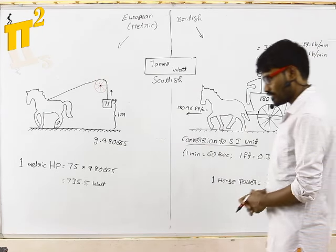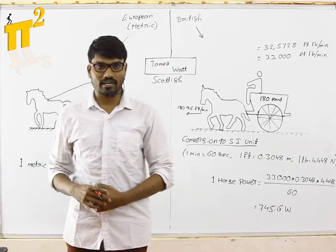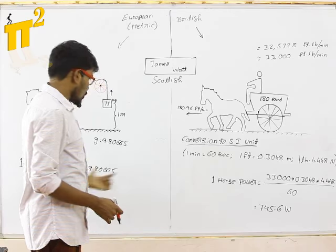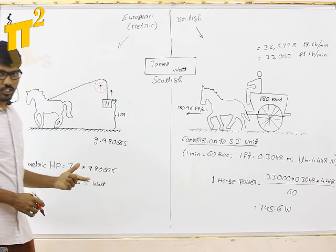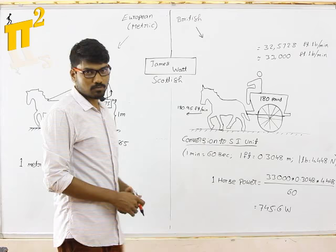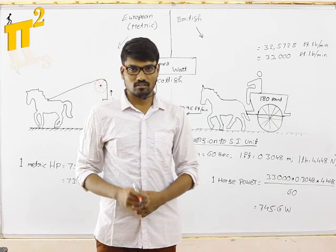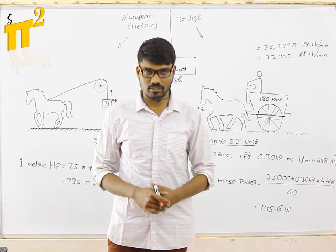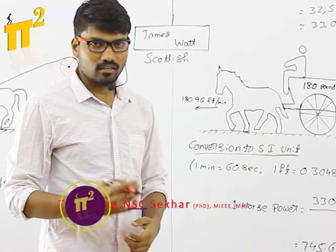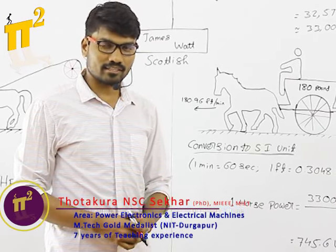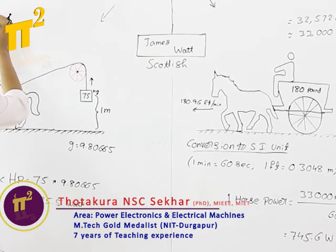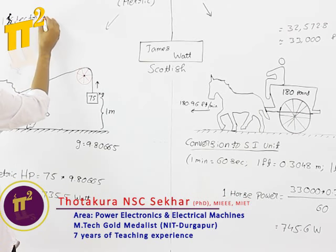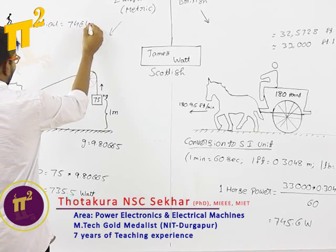Now what if somebody is asking one electrical HP is equal to how much? You may think only these two HPs are existing, but along with these two, there are many other horsepowers existing: one is boiler HP, hydraulic HP, air HP. Likewise, you have electrical HP also. One electrical HP is equal to 746 watts.